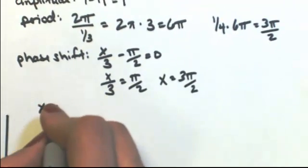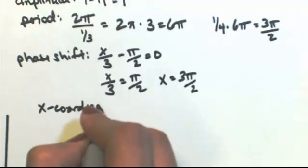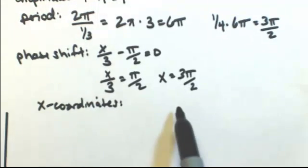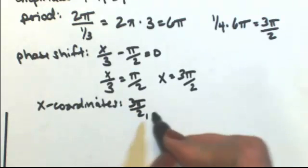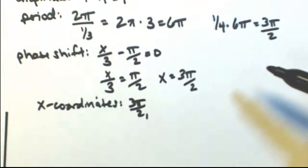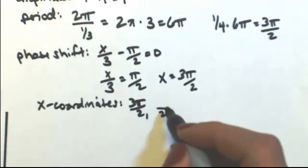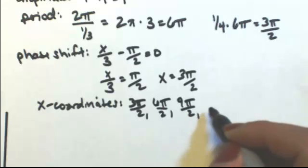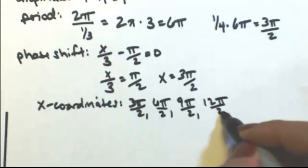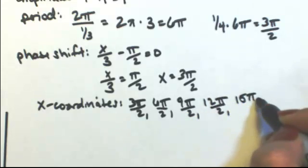So the x-coordinates are going to start at 3 pi over 2 and then add 3 pi over 2 each time. So really just add 3 pi to the top because the bottom will stay at 2. So I get 6 pi over 2 and 9 pi over 2, 12 pi over 2, 15 pi over 2.